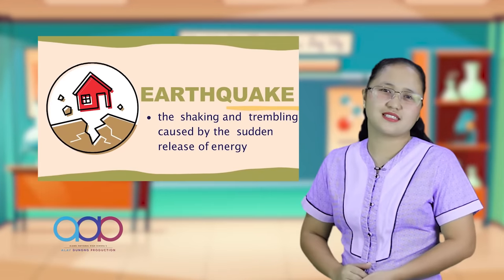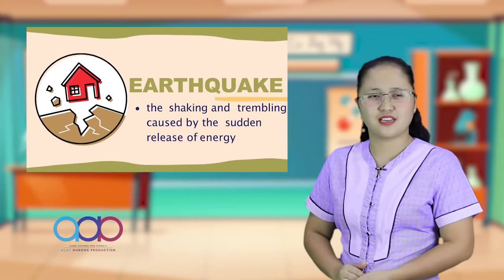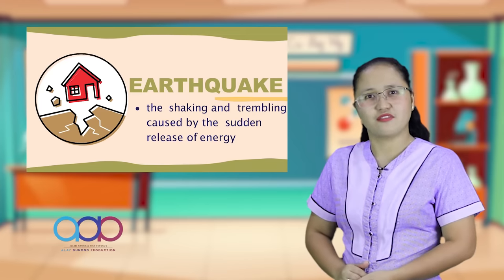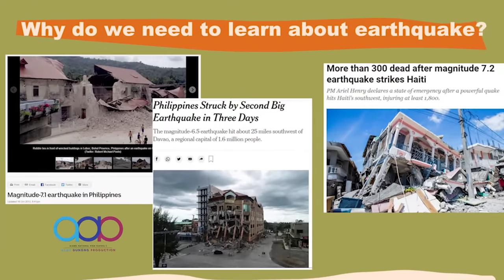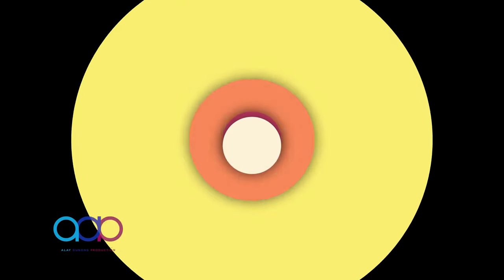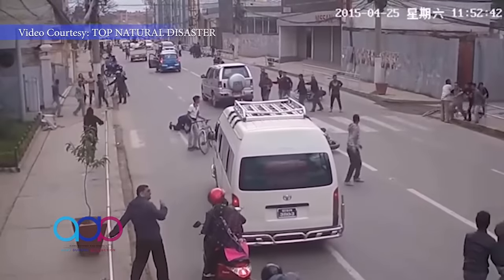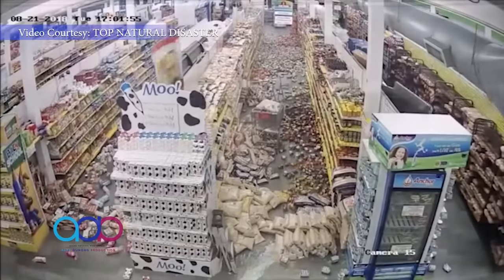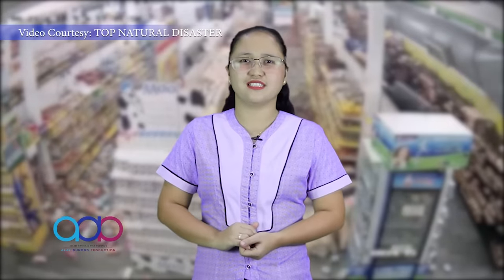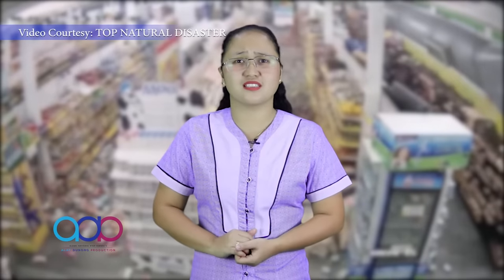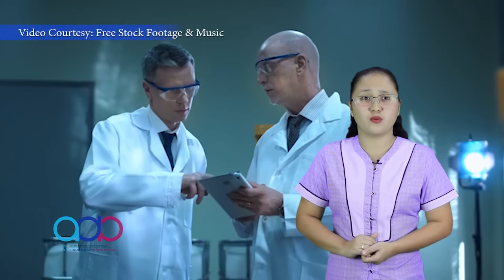Earthquake is used to describe the sudden shaking and trembling caused by the sudden release of energy from inside the Earth. Strong earthquakes have caused countless deaths all over the world and no one can stop quakes from happening. No wonder scientists have been working very hard to find a way to predict when an earthquake occurs.